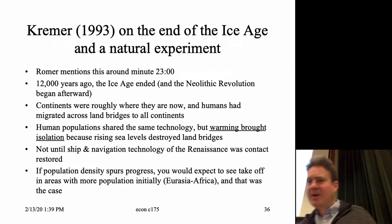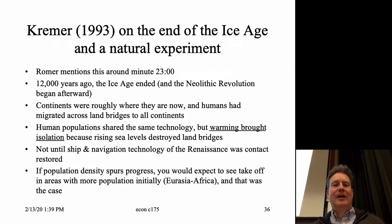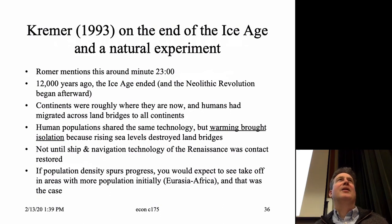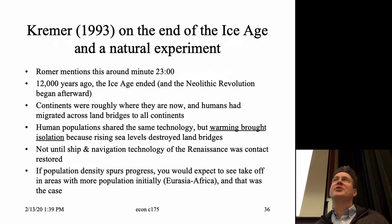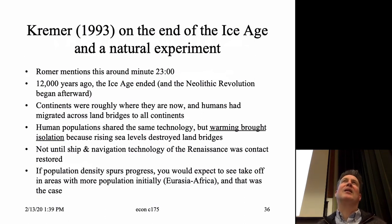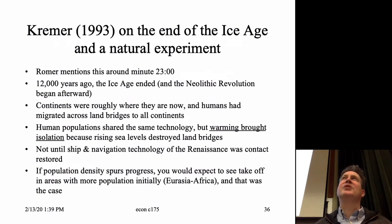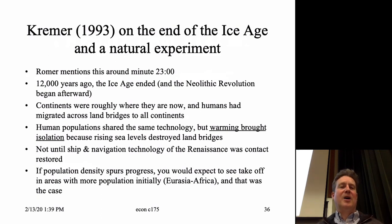If you think about the end of the last ice age — right before the Neolithic or Agricultural Revolution began — that's an example of a great natural experiment. Climate change at that time was exogenous to human behavior, and it set the stage for the Agricultural Revolution roughly 10 to 12,000 years ago.